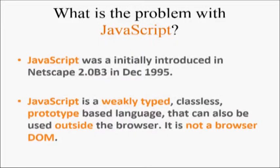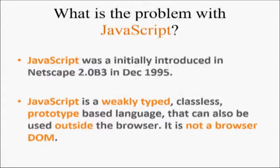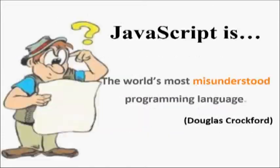So what is JavaScript? JavaScript was initially introduced in Netscape in 1995. JavaScript is a weakly typed, prototype-based language that can also be used outside the browser. JavaScript is the world's most misunderstood programming language according to Douglas Crockford.